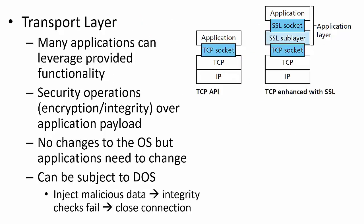Similarly, at the transport layer, if you were to provide security, many applications can leverage that — which is what we have seen in the case of TLS/SSL. Web applications can use it, email applications can use it, and so on, because these are running at the application layer. Earlier they were just opening regular sockets; now they can open secure sockets based on SSL and TLS. Even in this case, the security operation — that is, encryption and integrity — will be over the application payload.